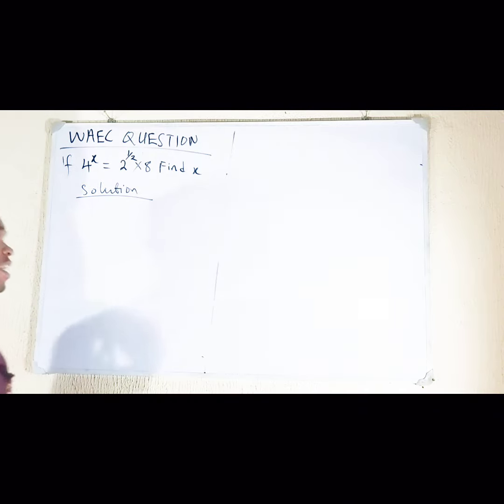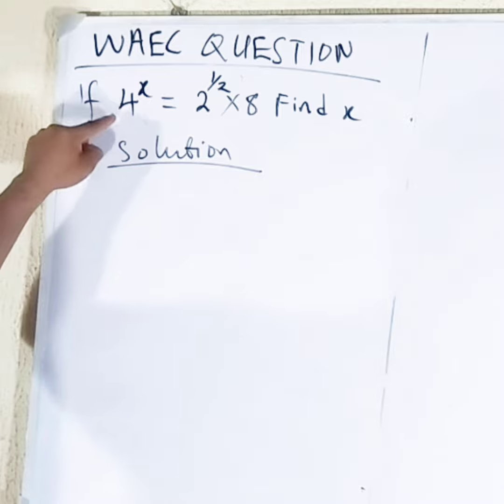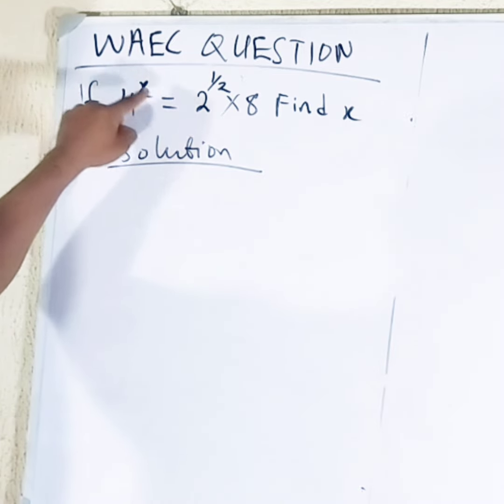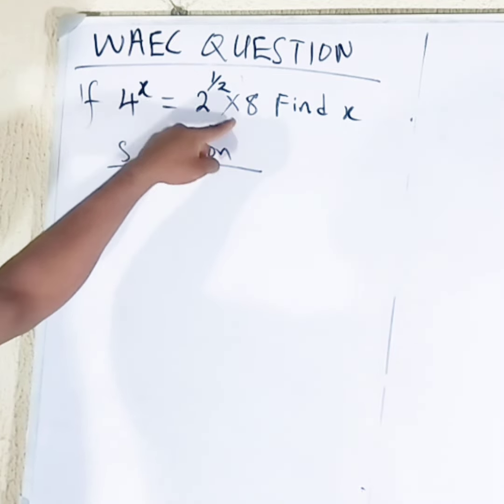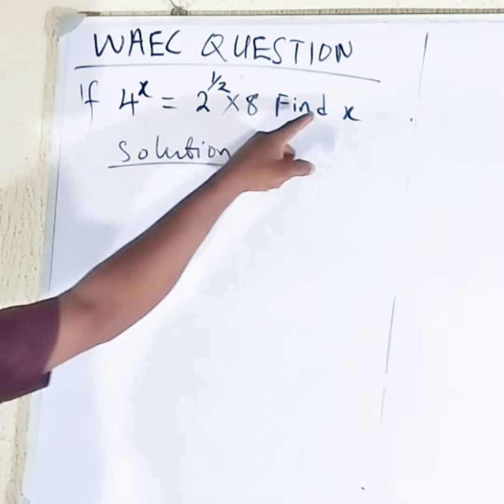Hello everyone! We can solve this WAEC question: if 4 raised to the power x is equal to 2 raised to the power half times 8, find x.